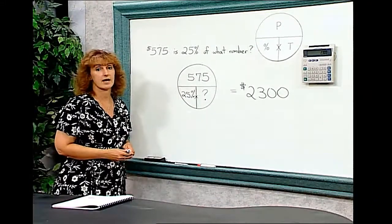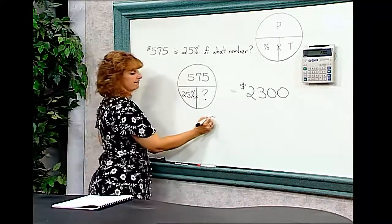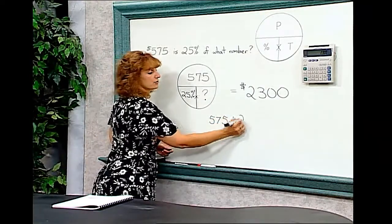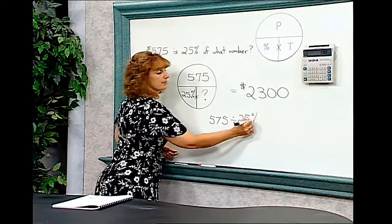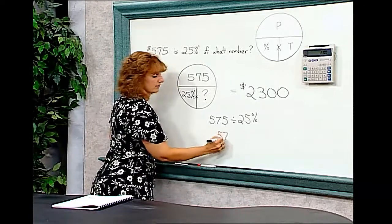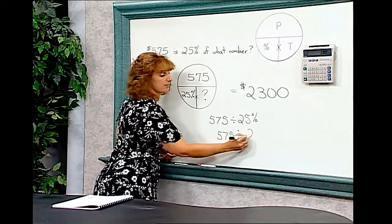If your calculator does not have a percent key, then you're going to need to divide 575 divided by 25 percent. But remember, you know how to change that percent into a decimal. So it would be 575 divided by .25.